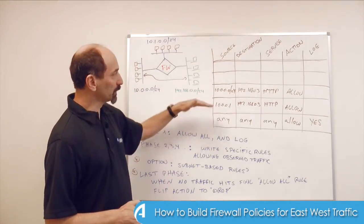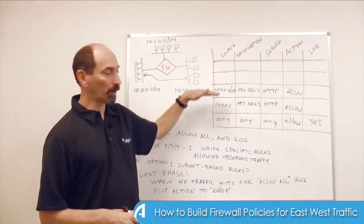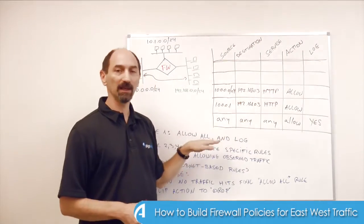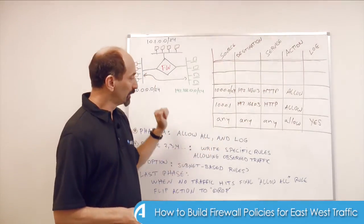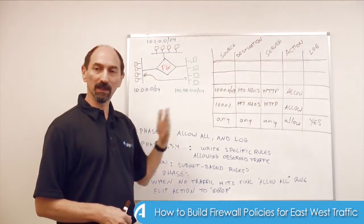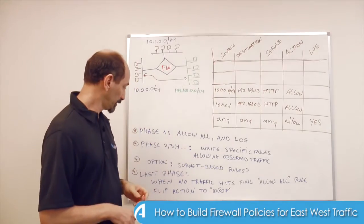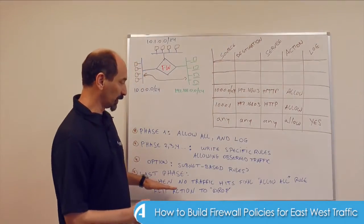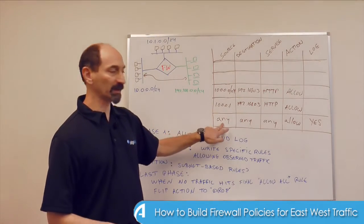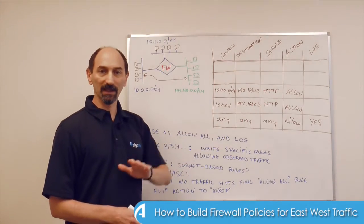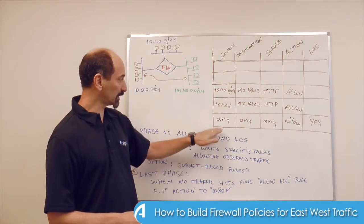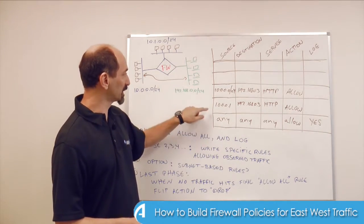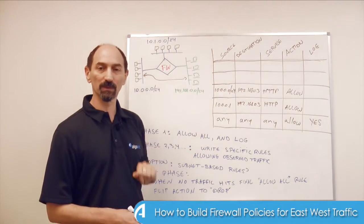You keep on doing this and grow the policy from the bottom up, while leaving the very last rule still as the any/any/any allow rule. You repeat this periodically for as long as you need. The stopping condition is when that very last rule is not hitting any traffic — meaning all traffic going through the firewall is being allowed by one of the specific rules you added above.